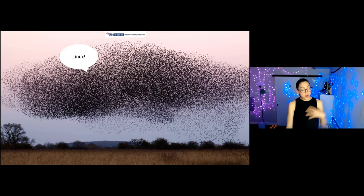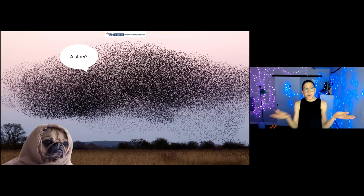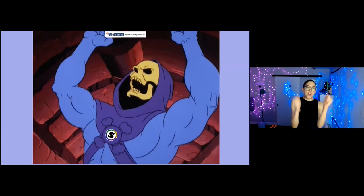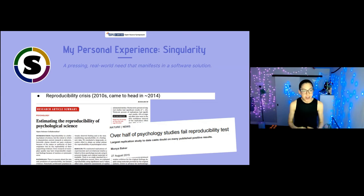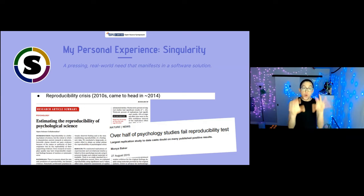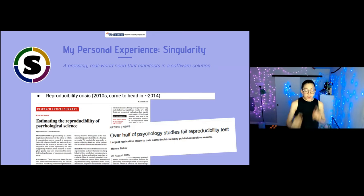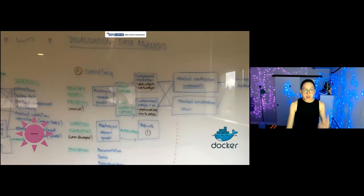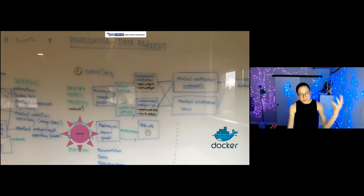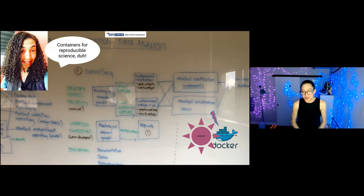I want to tell you a story I am qualified to tell. This is about the Singularity software. It starts back in 2014, which was the head of the reproducibility crisis that really came to a head around that time. You saw articles like this estimating the reproducibility of psychological science — over half of studies fail. If you were in the field at the time, you were like, oh my God, this is an affront to my entire work, my entire field. At the same time, you were probably experiencing the magic of container technologies. For me, Docker was 2015, first demoed in 2013. Very logically you're thinking: problem in science plus container technology — let's push those things together. Containers for reproducible science. Like, duh.